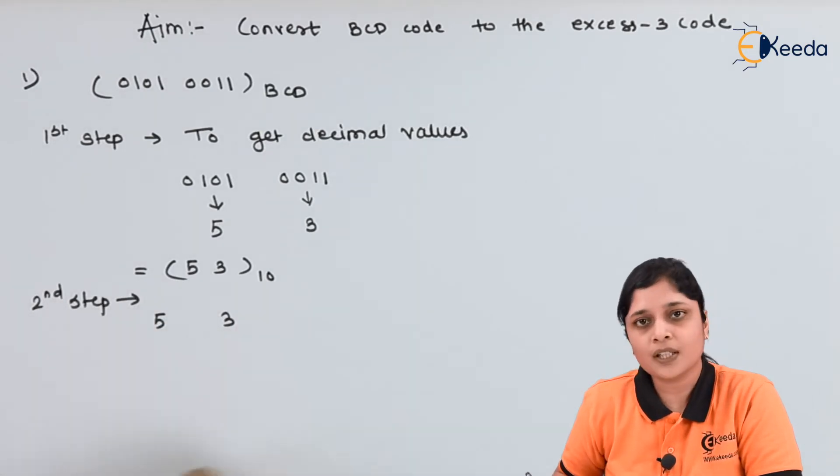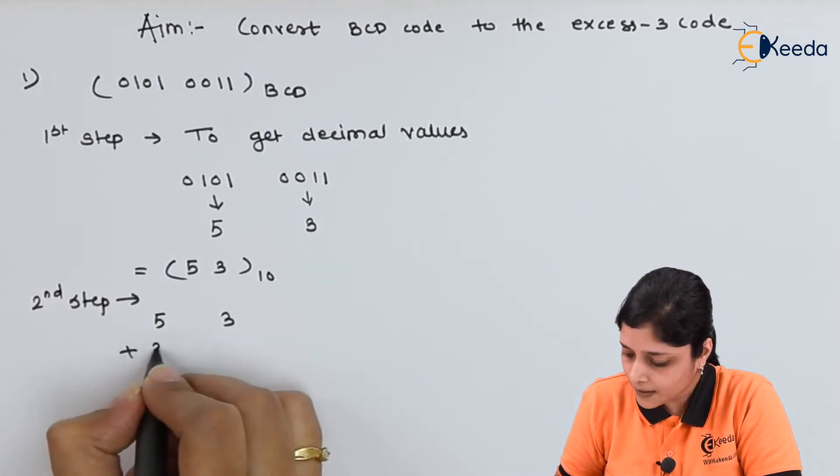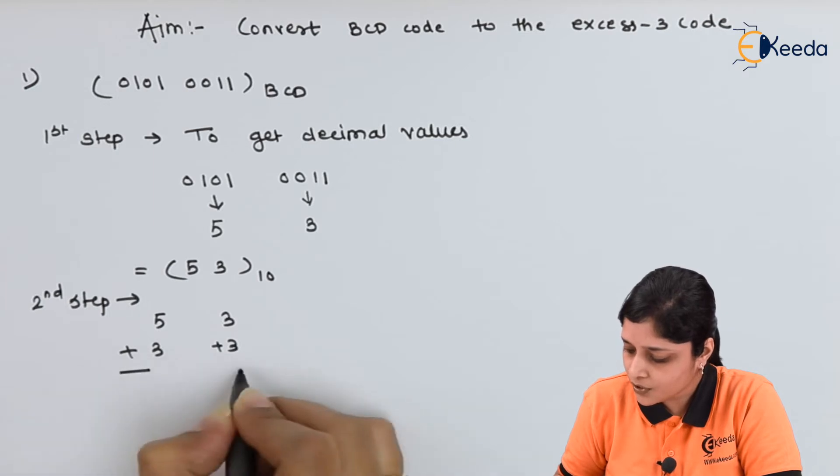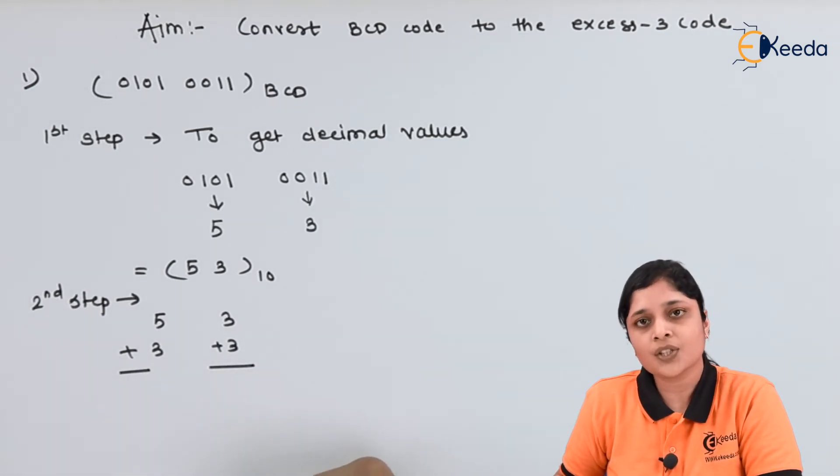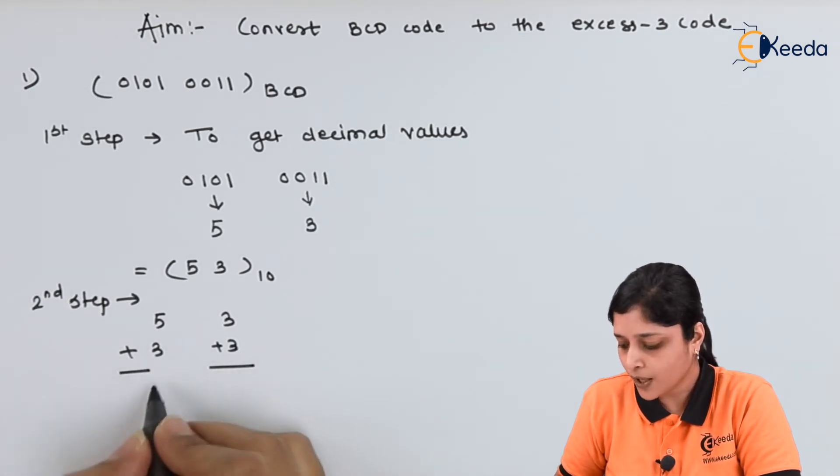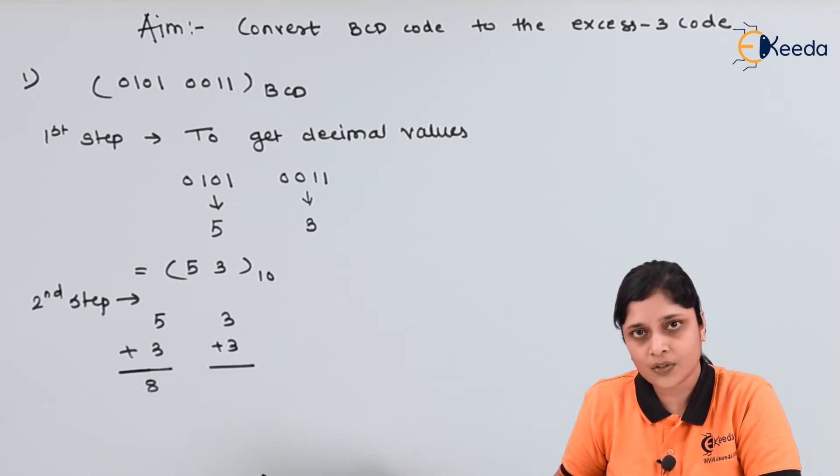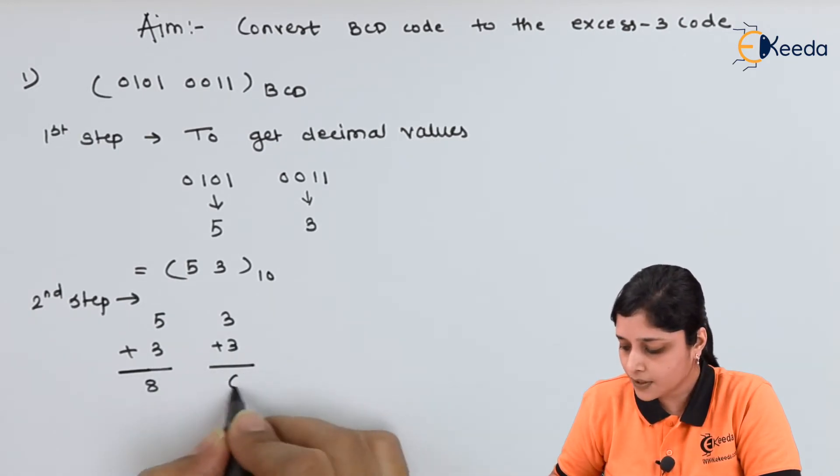write down 5 3 separately add plus 3 to the each digit. Each decimal digit. So 5 plus 3 will give you 8, 3 plus 3 will give you 6.